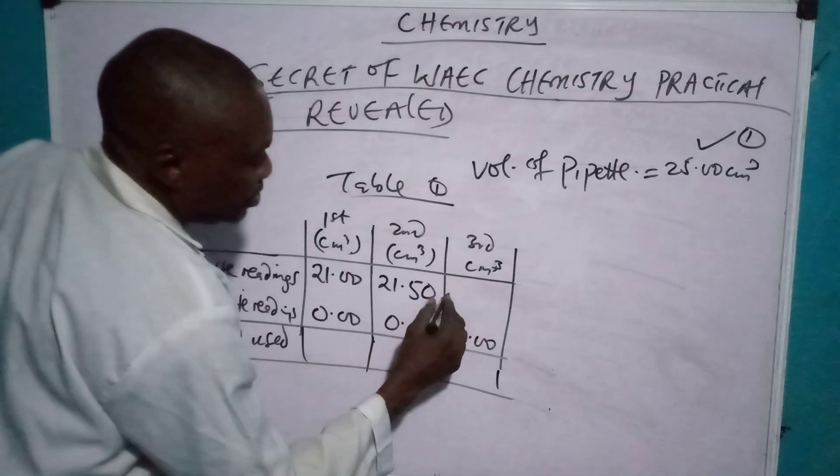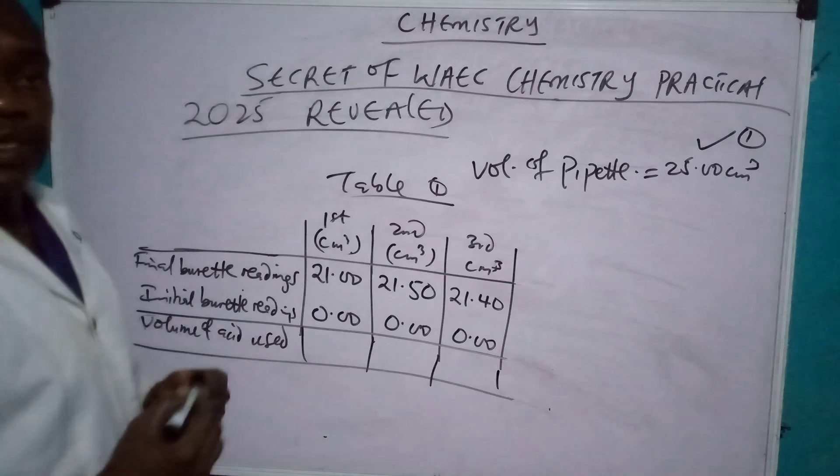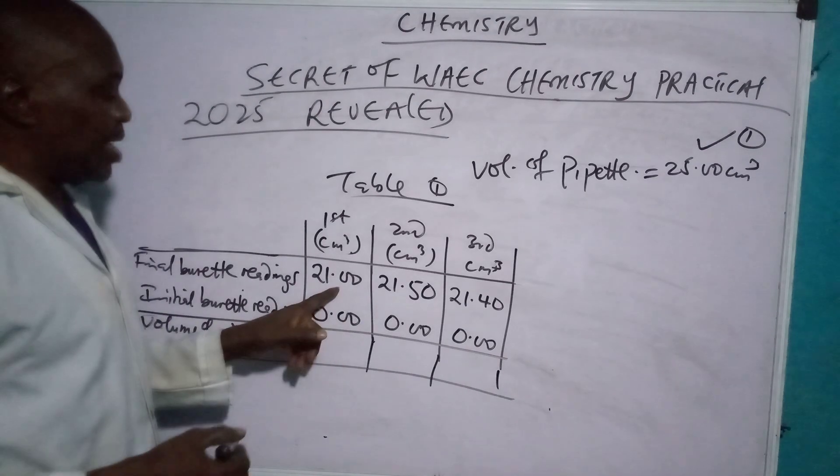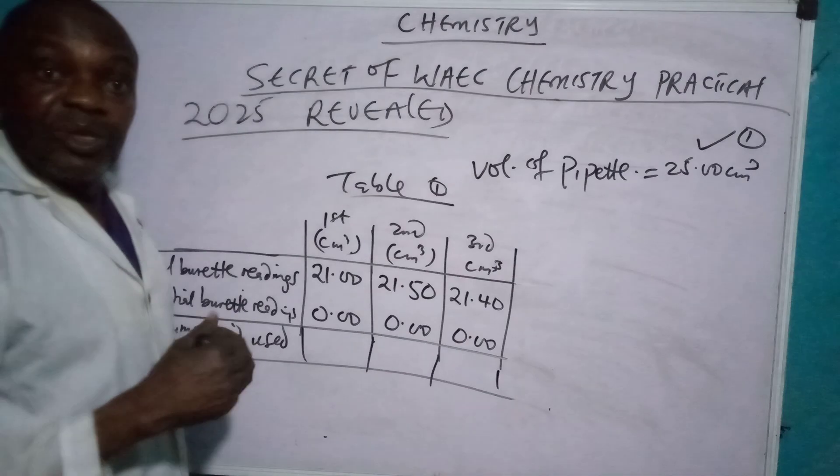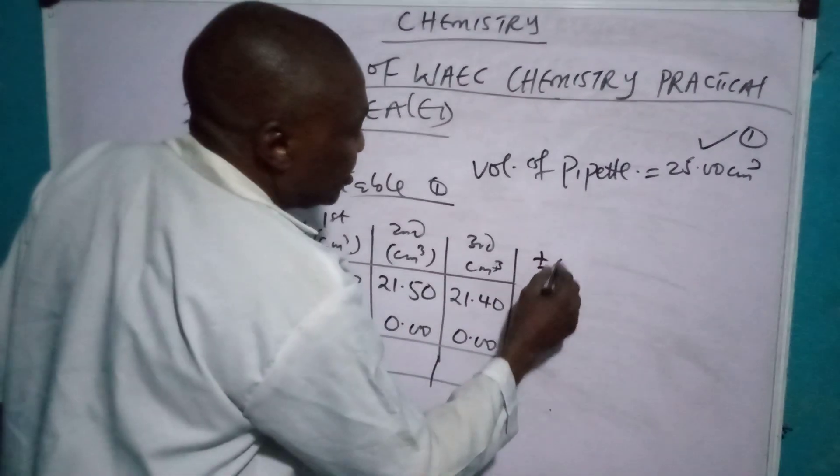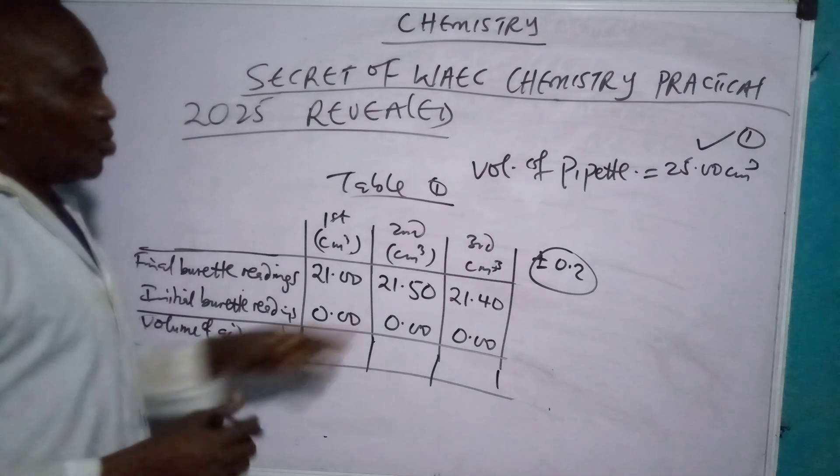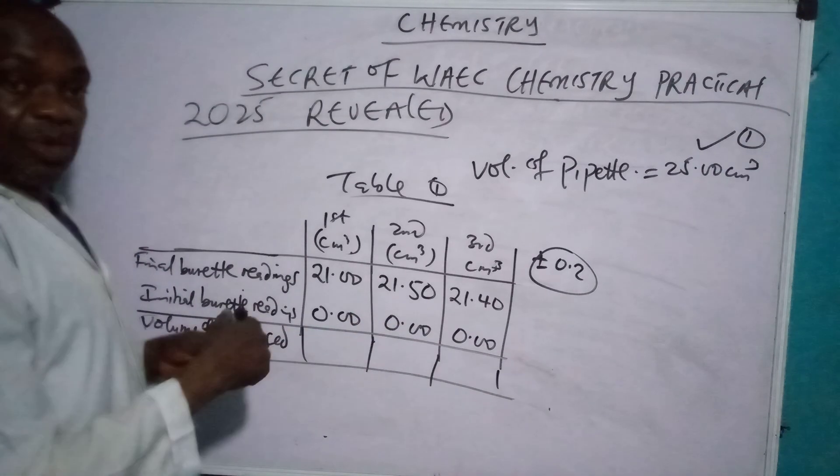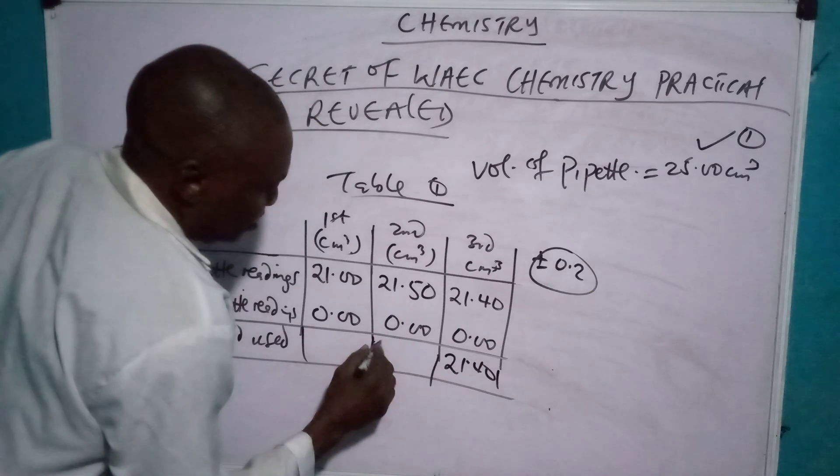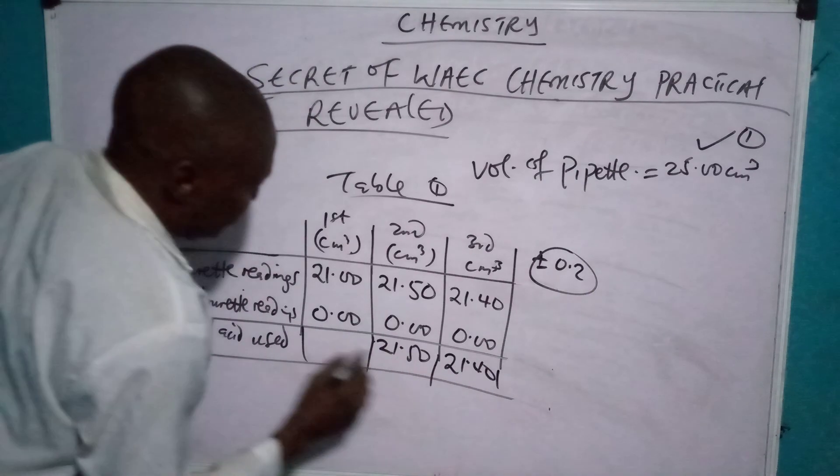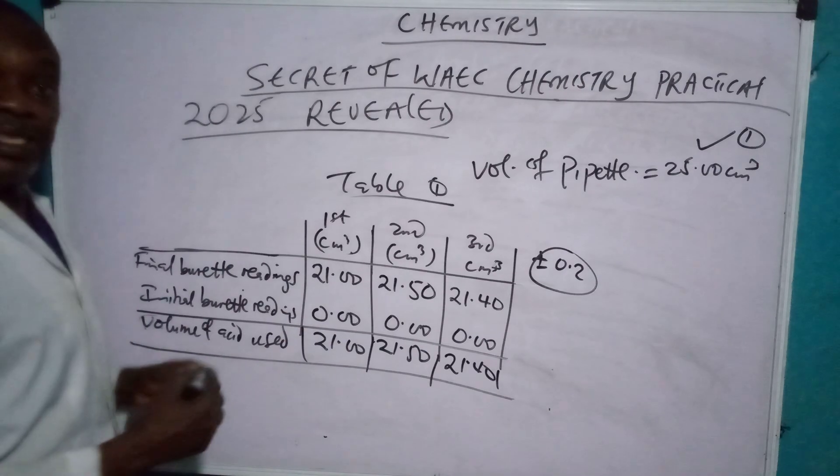Then you draw another one, you have 21.40. If you look at it, these two - this 21.00 and this one - they are not concordant, they are not close. This one, they are not close. Remember, they must not exceed plus or minus 0.2. That must always be in your brain where you are drawing it. Since, so long as you have had this, you now subtract. 21.40, 21.50, 21.00. See, this one is odd, but out. There's no need to cancel.